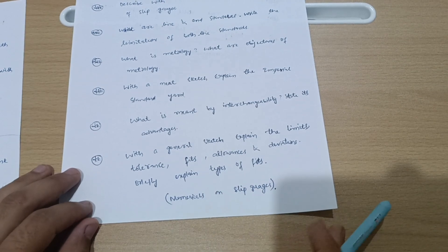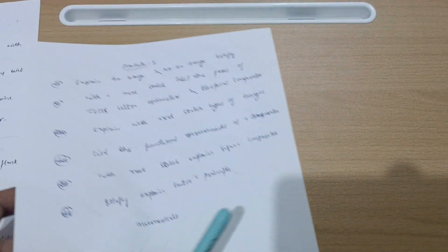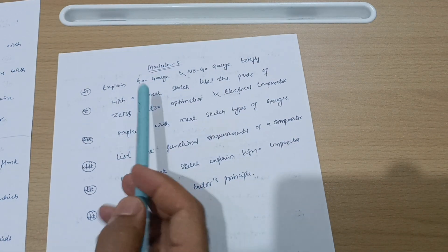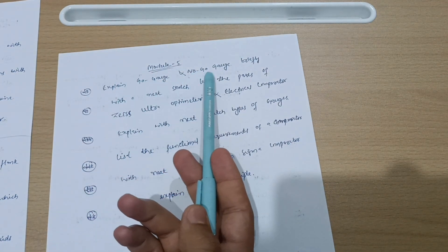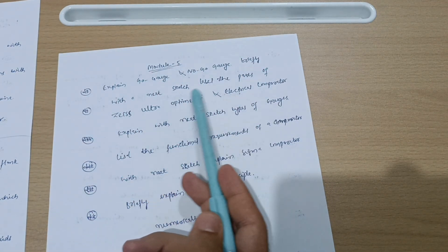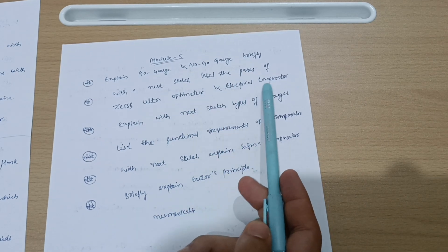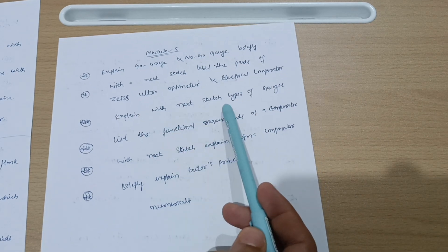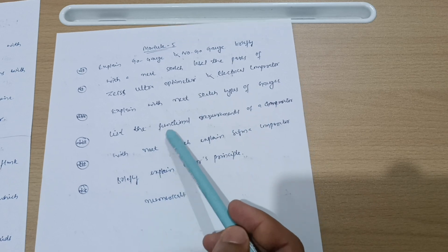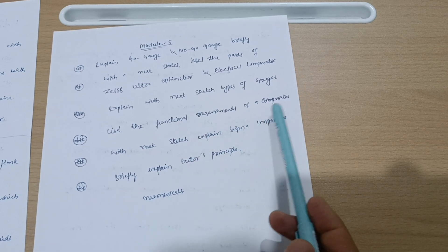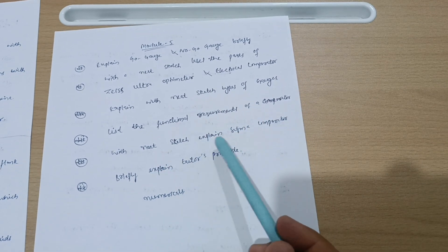Now last module is Module 5. Explain go gauge and no-go gauge briefly with neat sketch. Label the parts of Zeiss Ultra Optimeter and electrical comparator. Explain with neat sketch types of gauges and list the functional requirements of a comparator.